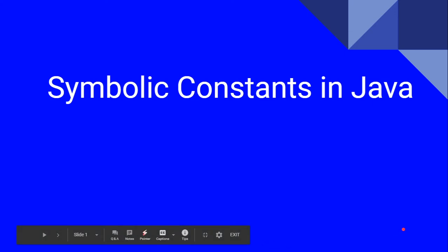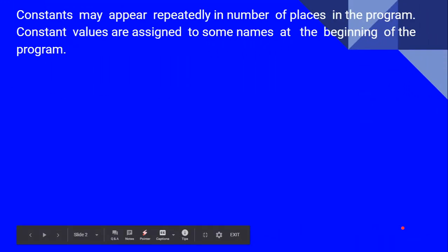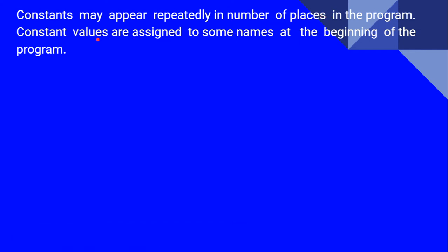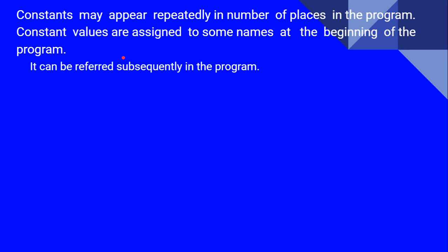Hello everyone. In this video, we are going to see about the symbolic constants in Java. We know that a constant cannot change its value during execution. Constant values are assigned to some names at the beginning of the program. We give some name to the constant and that name can be referred throughout the program. That is called a symbolic constant.